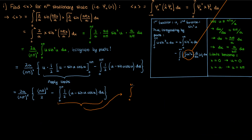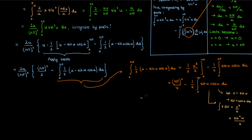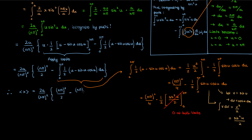Turning to the second expression, the integral of u is u²/2, and applying the limits gives n²π²/2 − 0, which simplifies to n²π²/4. For the integral of sin u cos u, I let v = sin u so dv = cos u du, giving ∫v dv = v²/2 = sin²u/2. Applying the limits, sine squared gives 0 at both nπ and 0. Adding the first two terms and substituting back into the expectation value equation gives the result: ⟨x⟩ = a/2.